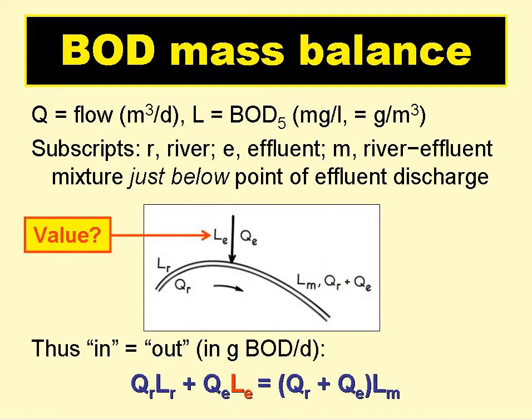The commissioners then set about determining the maximum permissible BOD of a treated wastewater to be discharged into a river. To do this, they considered a mass balance of BOD. Basically, this says that just downstream of the point of discharge, what goes in must come out. What goes in is the BOD in grams per day due to the river water upstream and the wastewater effluent, and this has to equal what comes out — the BOD, again in grams per day, of the downstream river water–effluent mixture.